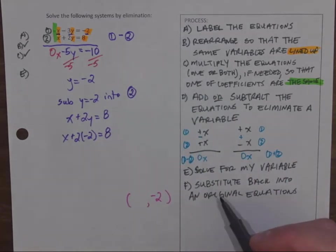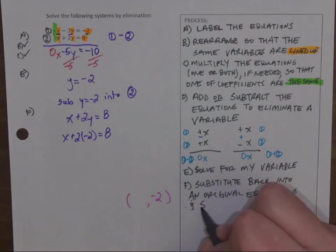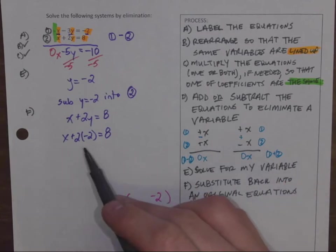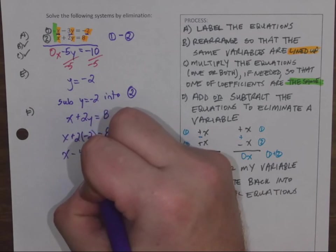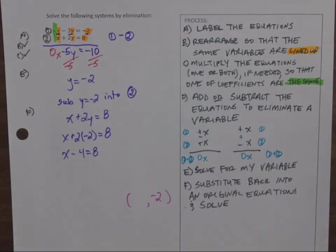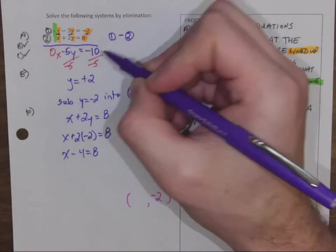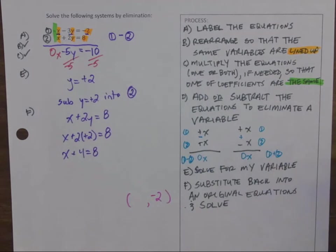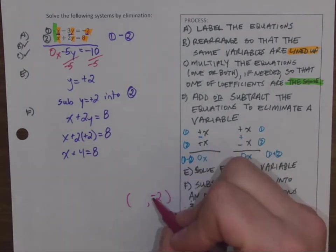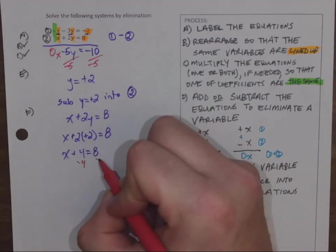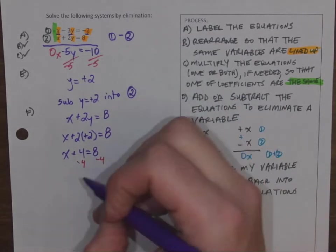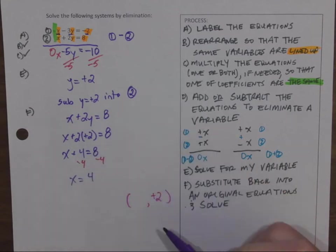Now, solve for my unknown. So now that I've subbed it in, let's math. Oh, that's not negative 2, that's positive 2. I caught it early. Take away 4, take away 4. And X is 8 take away 4, which is 4. Positive.